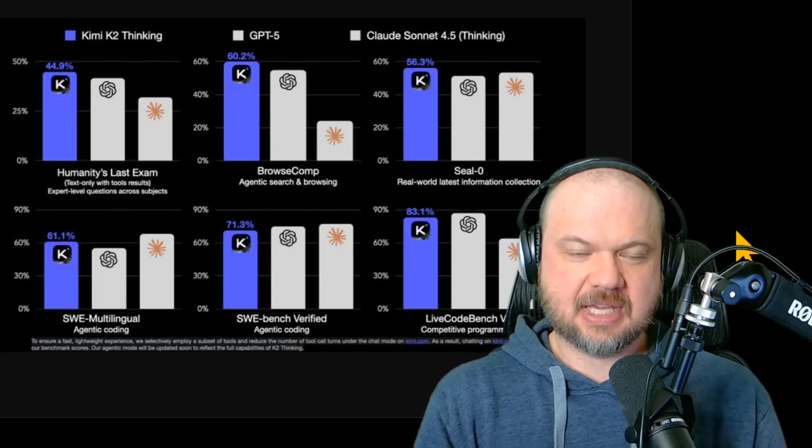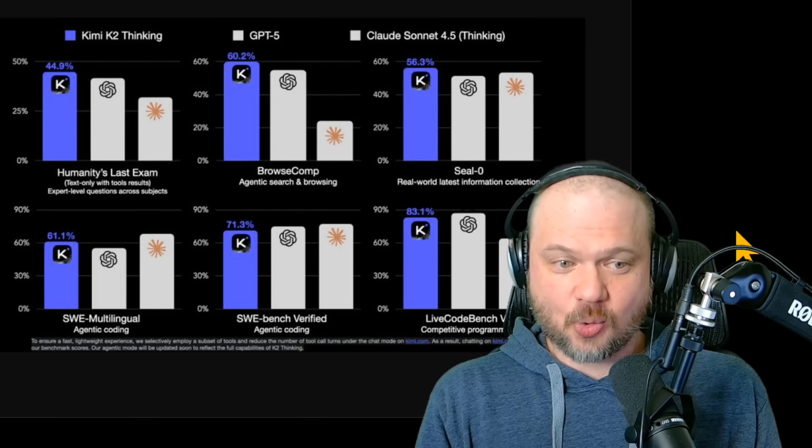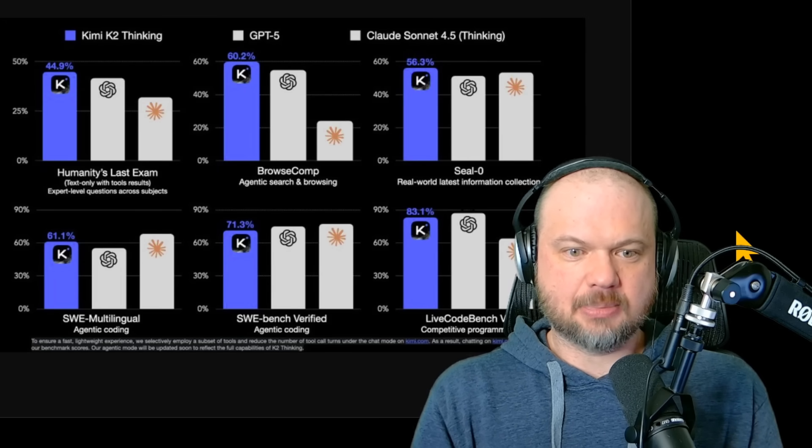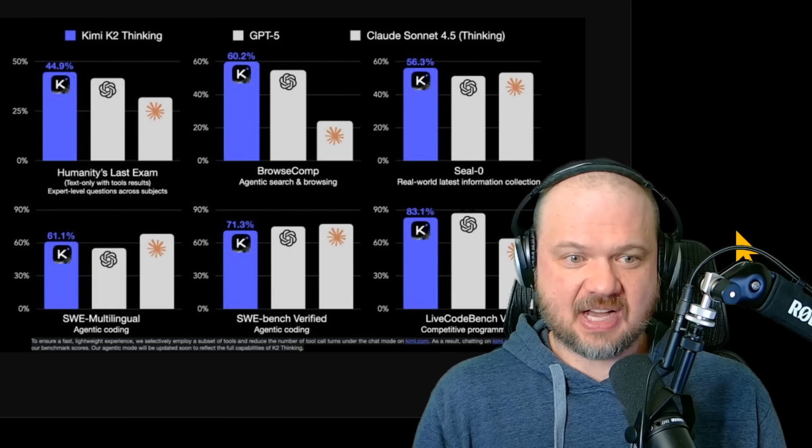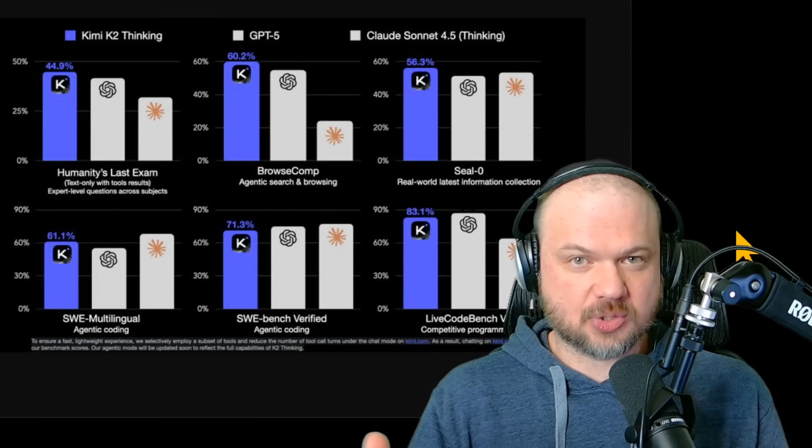So you've probably seen the headlines. Kimi K2 is an open source model out of China. It got the top score, state-of-the-art score on humanities last exam. It's got the top score on browse comp. It's outperforming models like Claude 4.5 Sonnet and GPT-4 in those areas, and it's looking really good across all the other scores as well.